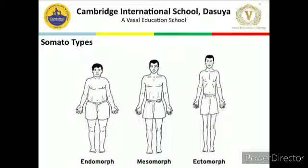These three types of body exist all over the world. As I told you, in Japan height may be less but the body types are the same; in Russia height may be high but the body types are the same — endomorph, mesomorph, and ectomorph — in every area all over the world. Now I will describe all these somatotypes and where we can use this knowledge.